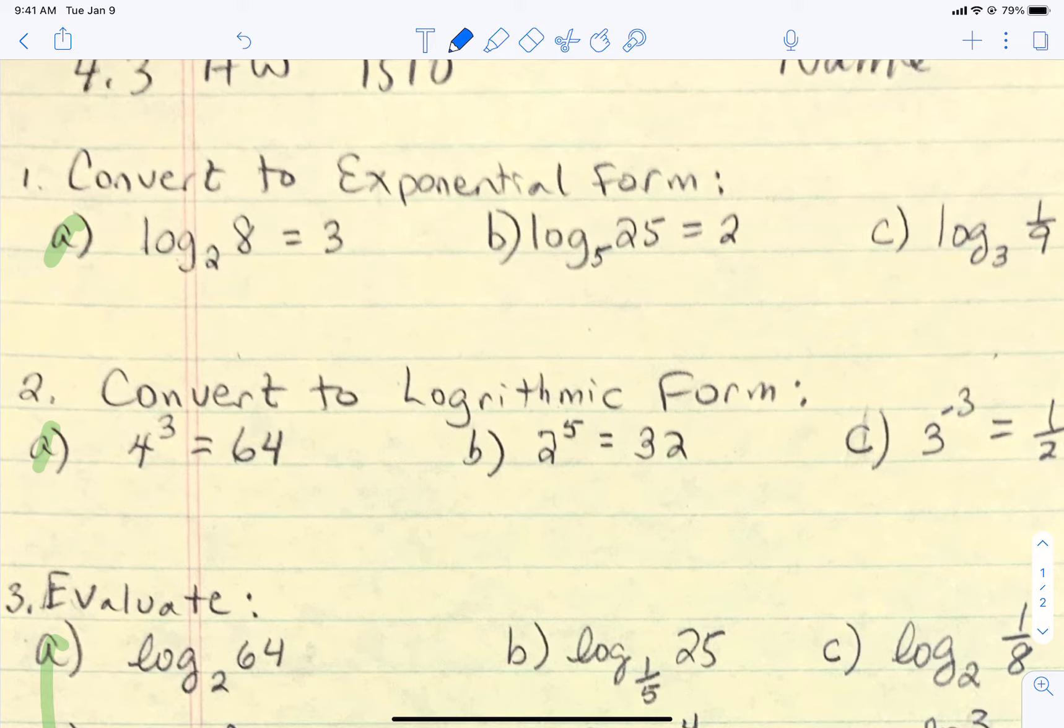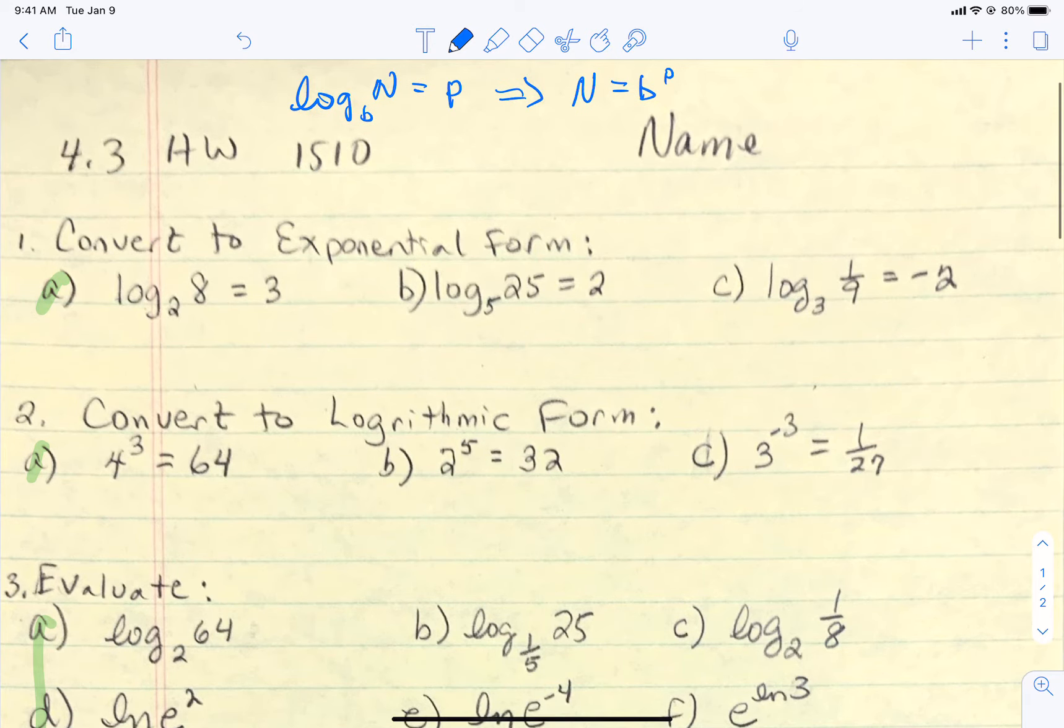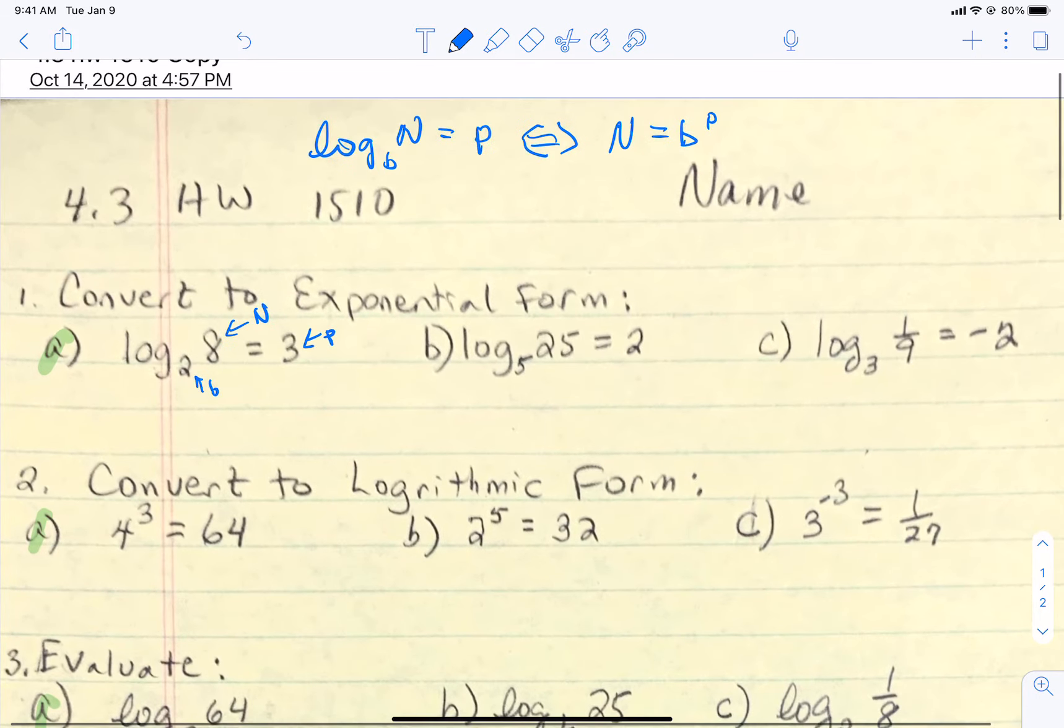It says convert that to exponential form. Now, I'm going to write above here the different forms. If we have the log base b of a number equals the power, that can be converted into exponential because we can say that the number is the base b to a power of p. So that's kind of where you can think about how to convert them back and forth. Let's do that for part 1a. When we look at it, you just want to identify what is your base, what is your number, what is your power. Once you've identified those things, then we can just convert it.